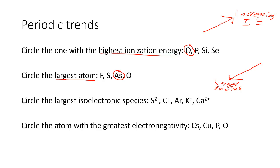We have an isoelectronic series. To confirm it's isoelectronic, we count the number of electrons in each atom or ion — if we get the same number, that's what isoelectronic means: same number of electrons. Sulfur starts at 16 electrons, so adding two gives us 18. Chlorine starts at 17, so with one additional electron it goes to 18. Argon is at 18. Potassium was at 19 but lost one. Calcium was at 20 but lost two. So indeed this is an isoelectronic series — all have 18 electrons.